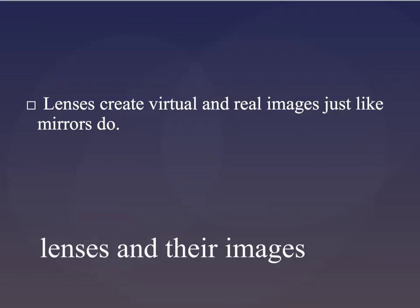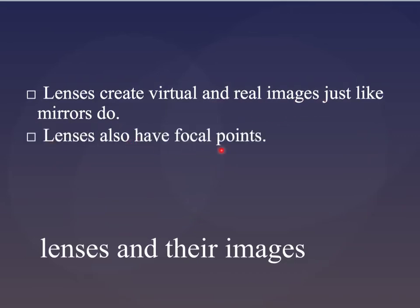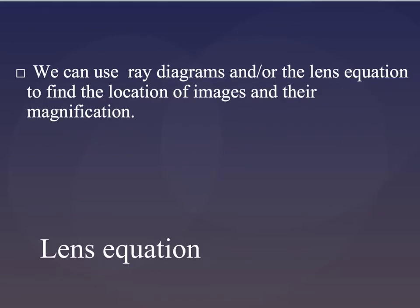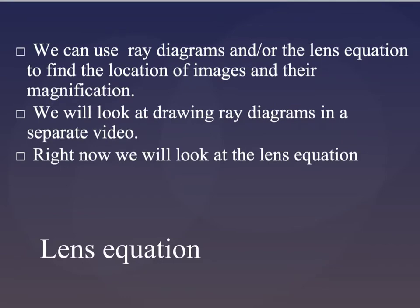Here's an example. When you look through lenses, you can create different kinds of images. You can create an image where it looks smaller and further away or where it looks bigger, but we can't necessarily tell which kind of image or which kind of lens each of these is unless we know a little more information. Just like mirrors, lenses create virtual and real images also, and lenses also have focal points. We can use ray diagrams or the lens equation to find the location of images and their magnification. But right now, we're going to look at the lens equation first.